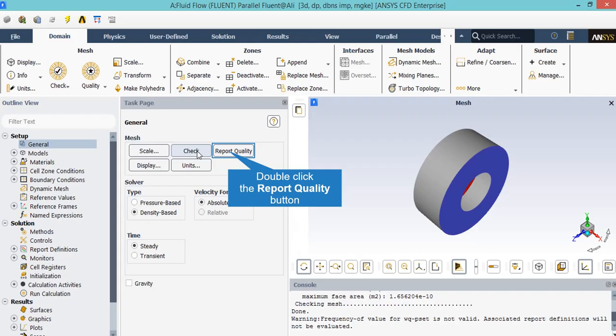By clicking on the report quality dialog box, you will see that in the console tab, the Fluent software will start to check your mesh quality.